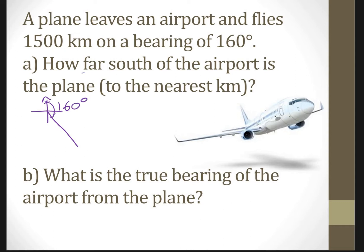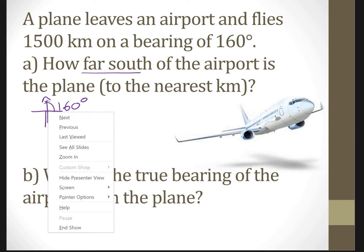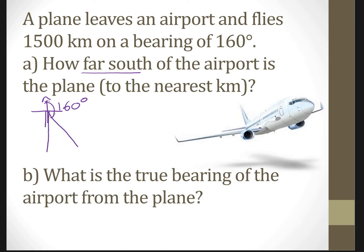The question asks how far south. We draw a connected diagram — how far south is this here? Set the diagram all the way down, and if I connect, it gives me a right angle triangle. This is what we're looking for — this is x, how far south. Because of this 160 degrees, the straight angle is 180, so this is left with 20 degrees. So this is 20 degrees.